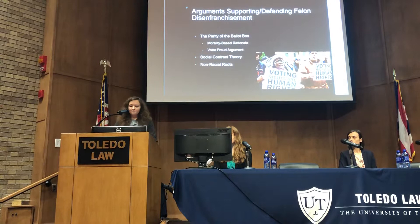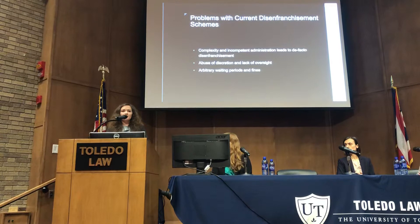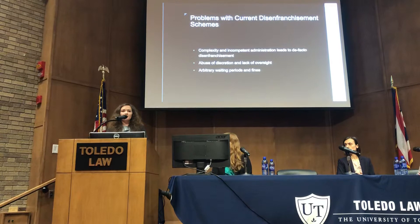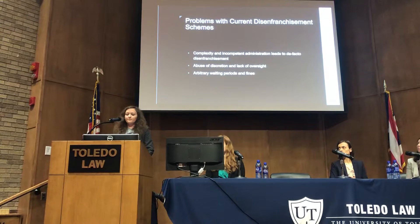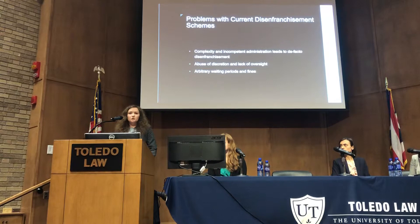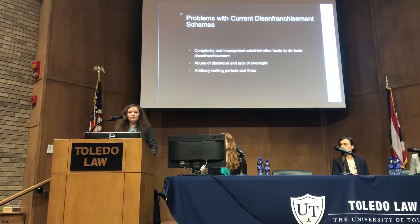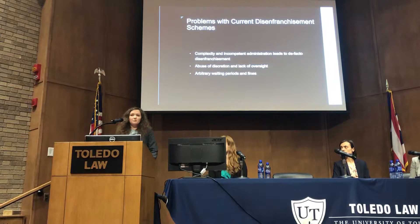There are other problems with the current implementation of felon disenfranchisement statutes, including the complexity and incompetent administration of such laws, which leads to de facto disenfranchisement — the disenfranchisement of people who would otherwise be eligible to vote. This includes people who are incorrectly labeled as felons or felons who qualify to vote but are turned away from the polls due to incompetent administration. Additionally, a lot of these programs run on executive discretion, which leaves them open to abusive discretion and lack of oversight, and leads to consideration of factors that should never be evaluated in deciding whether someone can vote — including church attendance, family histories, and their tendency to vote conservatively or liberally — and when denied, the government does not have to give them a reason why.